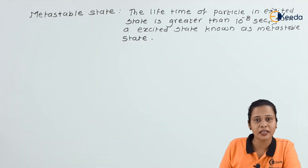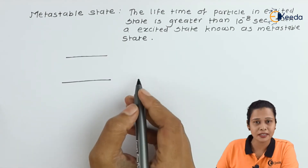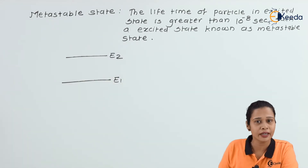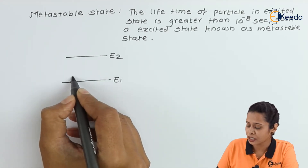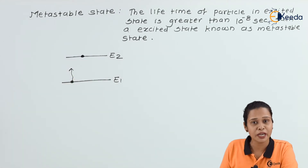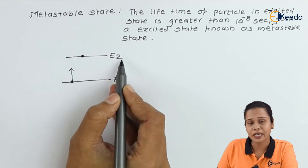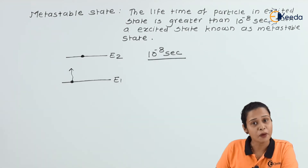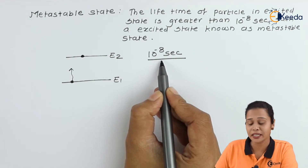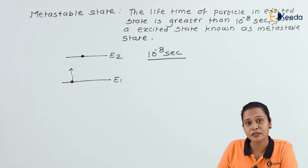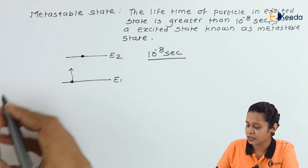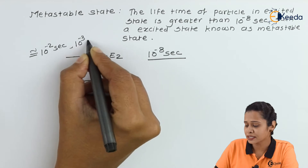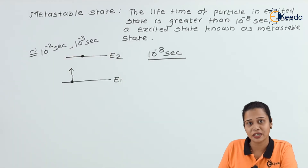We know the lifetime of the particle is 10 raised to minus 8 seconds. Consider two energy levels E1 and E2, where E1 is the lower energy level and E2 is the higher energy level. The particle will absorb some amount of energy and jump into the excited state, spending some time there. But if the particle spends more than 10 raised to minus 8 seconds in the excited state — approximately 10 raised to minus 2 or 10 raised to minus 3 seconds, meaning some milliseconds — then that excited state is called a metastable state.